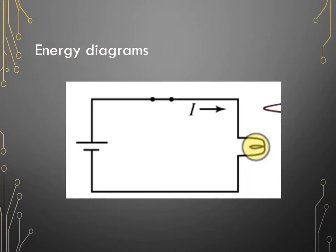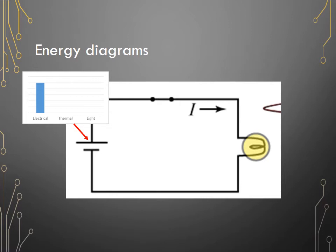So in an energy diagram, this is what it might look like. You'd have all electrical energy right here. In an ideal circuit, we say that the wires have no resistance, and so current flows freely. It costs no energy to move through the wires.